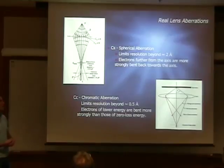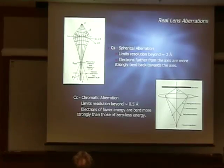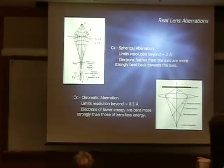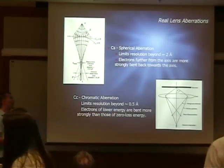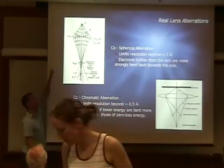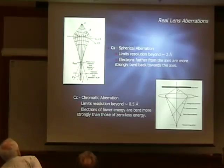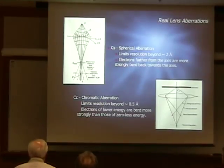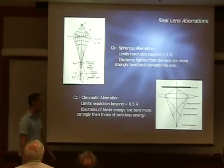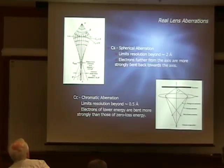In the microscope we have real lens aberrations. CS, the spherical aberration, is the aberration in the lens caused when electrons that are further from the axis are bent even more strongly towards the axis, so they never arrive at the same spot. If you're imaging a point, you actually wind up imaging a disc. Because of that, you have an inherent size limitation. The same type of thing is involved with chromatic aberration, but only with electrons of different energies, where the lower energy electrons — those that show some loss — are bent more strongly as well.